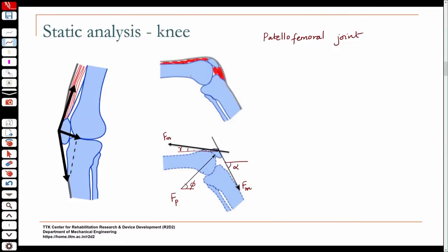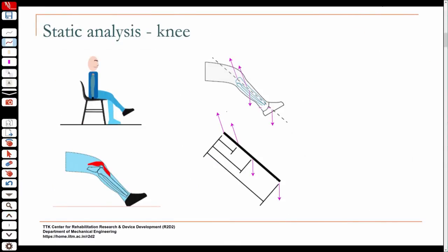Sometimes the cartilage between the two will wear off, which could also cause the moment arm for the muscle force to decrease. For the equilibrium equations, you have fm·cos(gamma) + fm·cos(alpha) + fp·cos(phi) = 0. The value of fm is determined from the previous analysis where you looked at the loading of the tibiofemoral joint and found fm for that particular loading and weight of the lower leg.